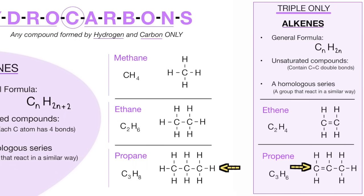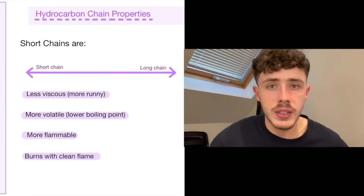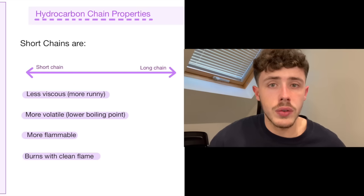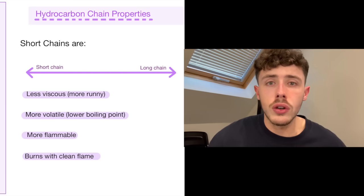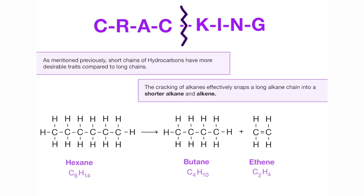Here are a couple of examples. Different hydrocarbons carry different properties, and these change depending on how short or long the chains are. Here are some important properties that you need to know. As you can see, a longer chain is normally not as good as a shorter chain in reality, so there is a process called cracking that gets around this.